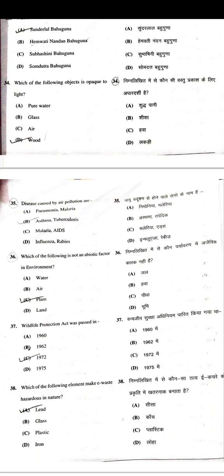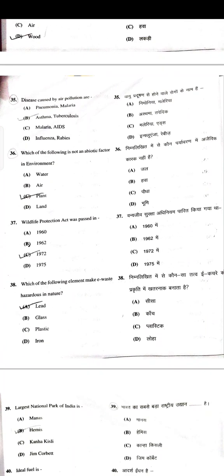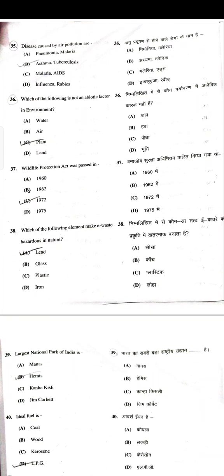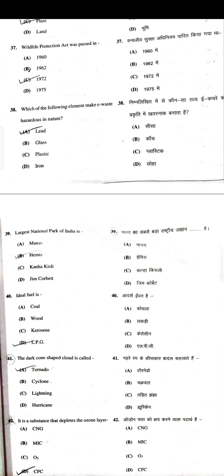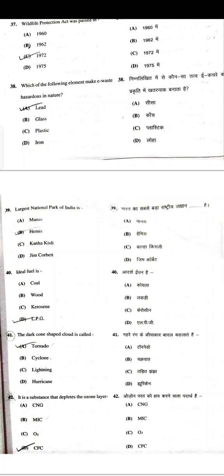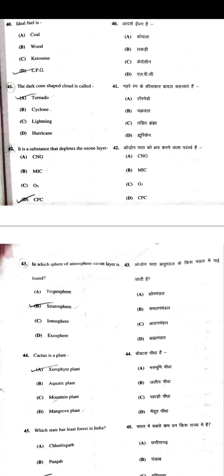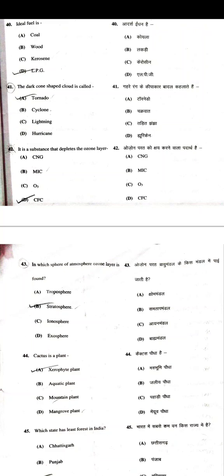Which of the following objects is opaque to light — Wood. Diseases caused by air pollution are asthma and tuberculosis. Which of the following is not an abiotic factor in environment — Plant. Wildlife Protection Act was passed in 1972. Which element makes e-waste hazardous — Lead. Largest national park of India is Hemis. Ideal fuel is LPG. The dark cone-shaped cloud is called a tornado.